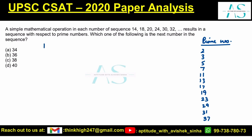Okay, let's look at the sequence: 14, 18, 20, 24, 30, 32 — and we are looking for the next term. If I take 14 minus 1, that gives us 13.